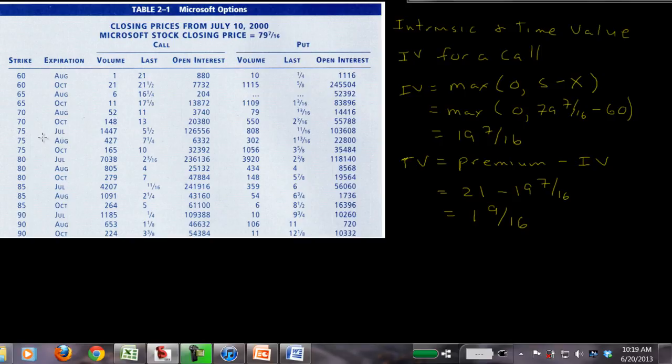If we go down here to the 75, the call options with an exercise price of 75, July, August, and October, you'll notice that the July sells for five and a half, the August sells for seven and a quarter, and the October sells for 10. They all have the same intrinsic value, so the difference between these is the time value. When you have more time until the option expires, people are willing to pay more for that option. It has a higher time value.